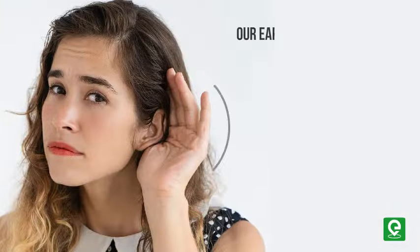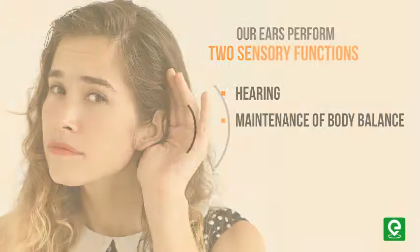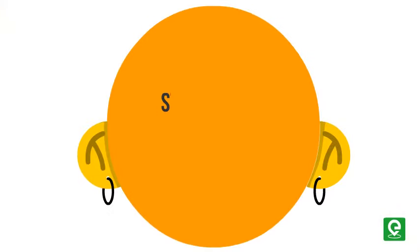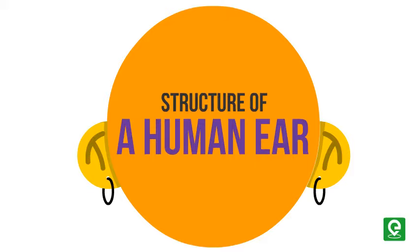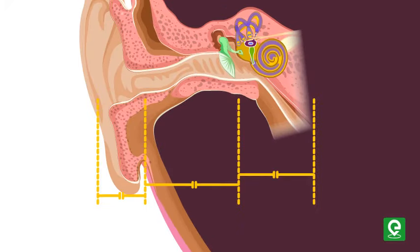Actually, our ears perform two sensory functions: hearing and maintenance of body balance. So let's learn about the structure of a human ear. Anatomically, the ear can be divided into three major sections.